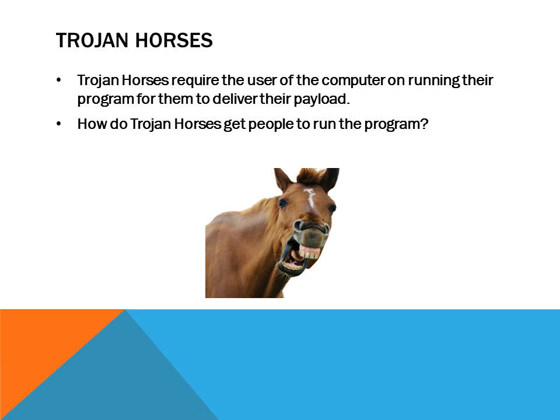In order for a Trojan horse program to be activated, it requires that the user run the program that the Trojan horse is located in, and then it's able to deliver its payload. However, Trojan horses trick people into allowing them to run the program — it'll pretend to be something else, possibly even antivirus software, and it will end up actually being malware that will destroy your files and information. That's how Trojan horses work — they trick people, much like the Roman sack of Troy.